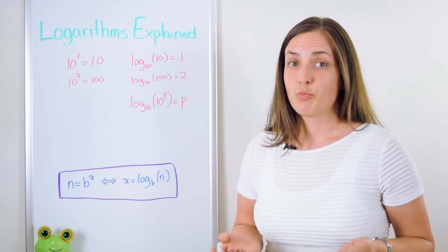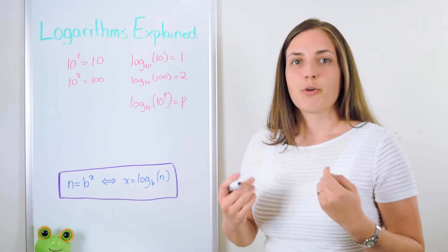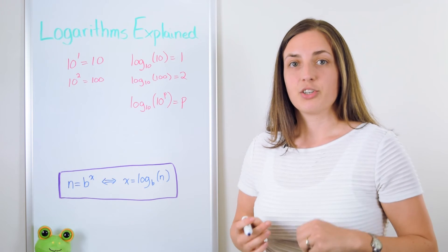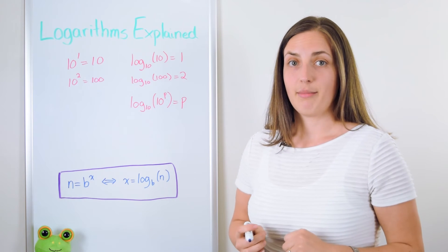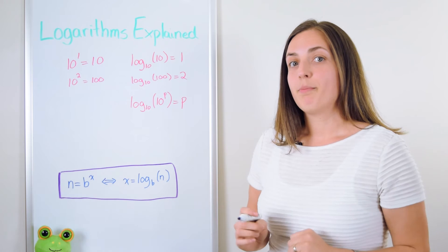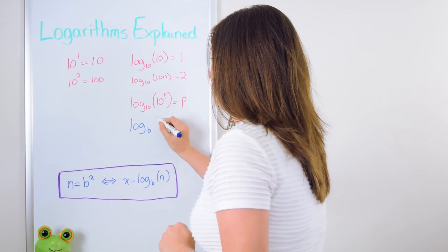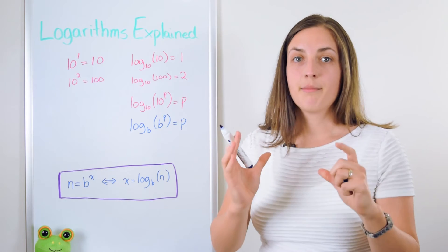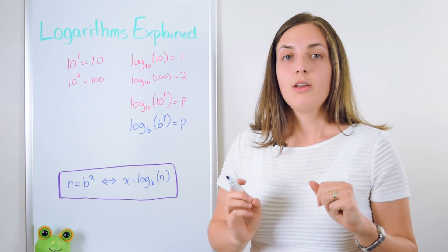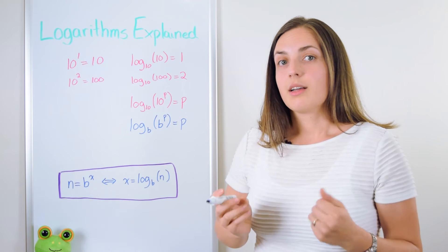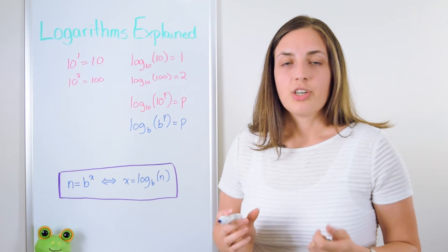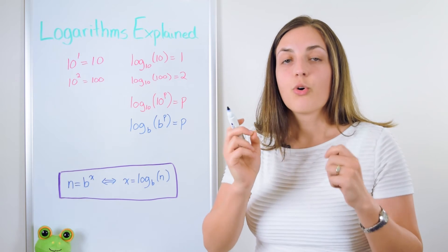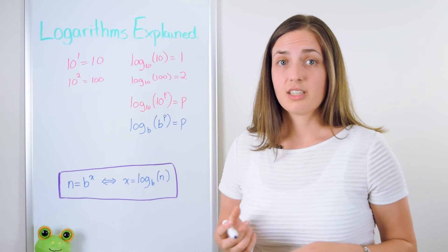This also works much more generally. This works for any base. So your base could be 10 or it could be 2 or it could be e which is a very important number in terms of natural growth in all of mathematics. But let's write down any general base b. The log base b of a number b to some power p will always equal that power p because you're still asking the question if I take base b what power should I put in the exponent in order to get an answer of b to the p. The answer is clearly p.